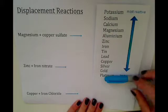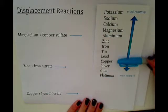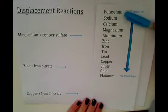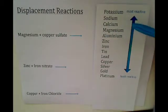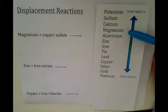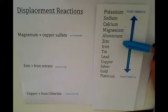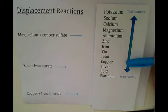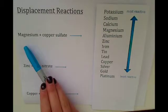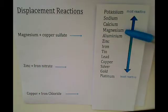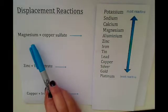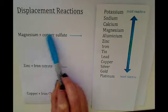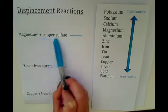We can see this by looking at the reactivity series of metals. We've got potassium at the top, all the way down to platinum at the bottom. When looking at displacement reactions, you need to look at the reactivity series and see where the metals lie in relation to each other. For the first example, you've got magnesium, which is near the top, and copper, which is below magnesium. So in this case, magnesium is the more reactive metal.